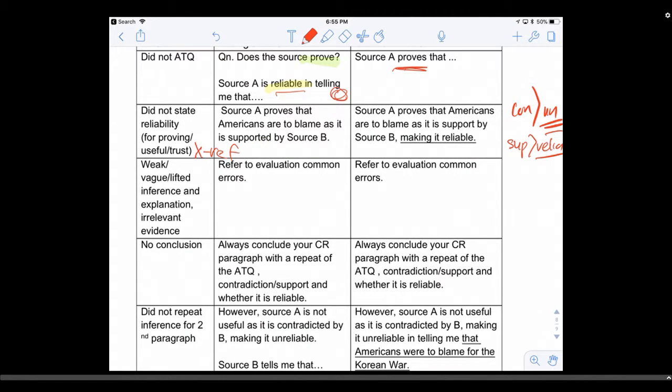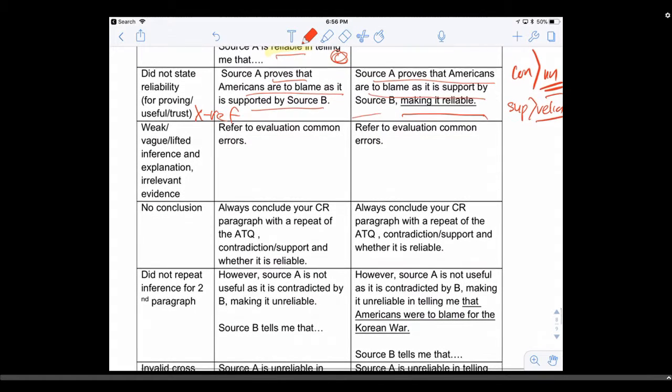You must mention reliability in your second paragraph. If you just say 'A proves that Americans are to be blamed as it is supported by B' with no mention of reliability, it is wrong. It should be: 'A proves that America is to blame as it is supported by B, thus making it reliable.'